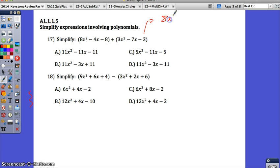I have 8x² - 4x - 8. I'm going to rewrite this second polynomial right underneath that one, lining up the terms that are like. So plus 3x² - 7x - 3. And I'm just adding these two together, so I can just add each column now that I have them lined up.